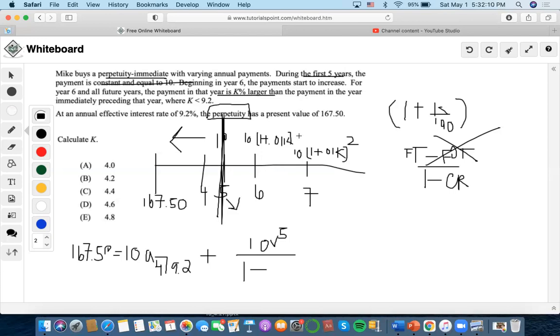We have to discount these v^6, v^7, so let's find the common ratio. The tens cancel out, so the common ratio is (1 + 0.01k)*v, and now we set it equal to this whole equation.